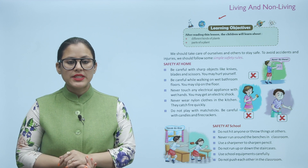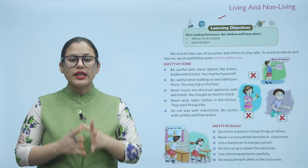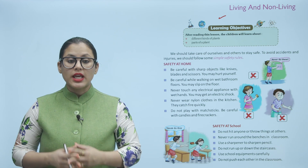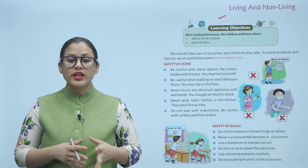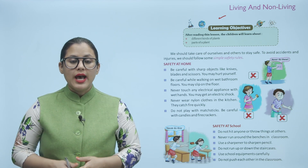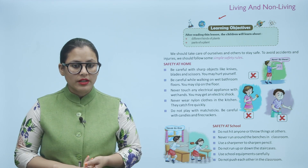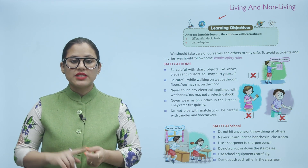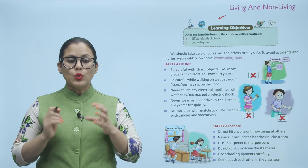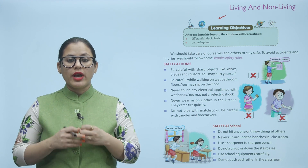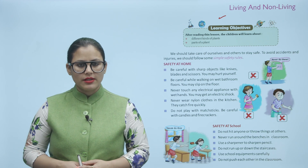School mein kuch safety rules follow karne hain: sabse pehle toh aap kisi ko bhi hit nahi karenge ya ek doosre pe cheezein nahi phenkenge. Classroom ke benches mein idhar udhar nahi daudhenge. Pencil sharp karni hai toh sharpener ka use karenge. Staircase pe oopar niche nahi daudna hai. School ke equipments ko carefully use karna hai aur classroom mein ek doosre ko bilkul bhi dhakka nahi dena hai.